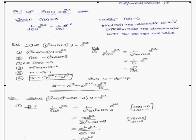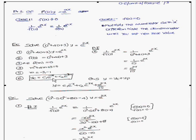The general solution is y = yc + yp, that is, complementary function plus particular integral. The particular integral is e^(2x)/15, and adding the complementary function gives the complete answer.